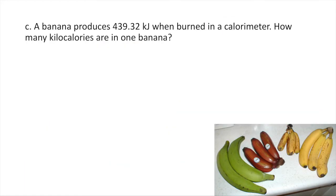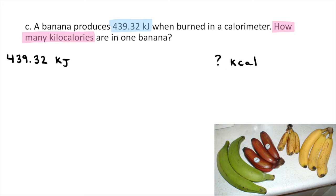A banana produces 439.32 kilojoules when burned in a calorimeter. How many kilocalories are in one banana — what would it say in the nutrition facts? What do they give you? That's 439.32 kilojoules. What are they asking for? That's kilocalories. So the first thing we need is a conversion factor: there are 4.184 kilojoules in every one kilocalorie.